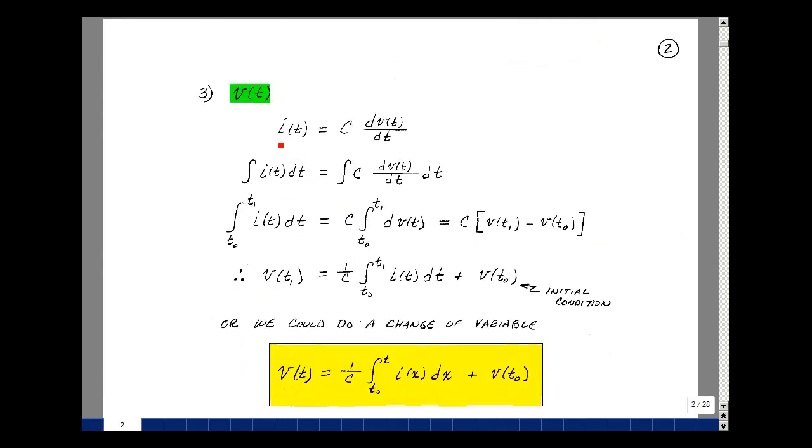From our definition of a capacitance, I of t is equal to C times dV dt. Let's solve for V in terms of I. Integrate both sides of the equation, dt, and evaluate that from T0 to T1. Now, the dt's cancel, C I'll bring that out in front, and I've got the integral of 1 dV, which is going to be the value of V at the upper limit minus the lower limit.